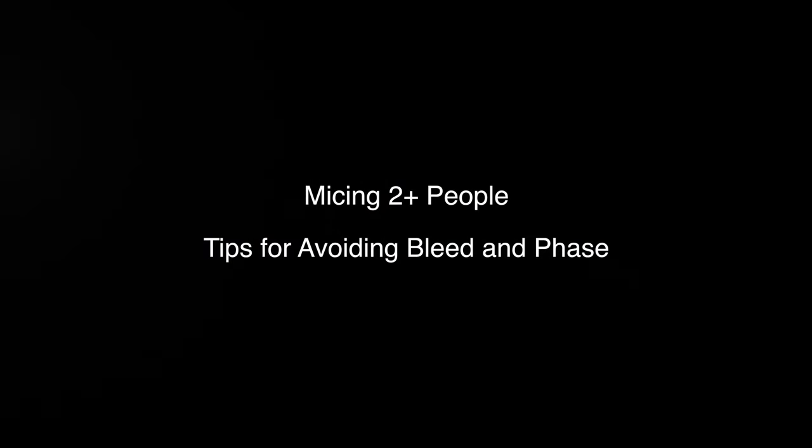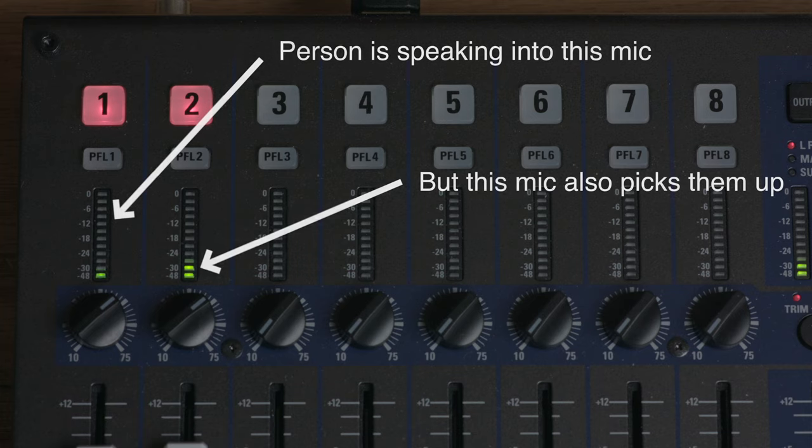In this episode, let's talk about some of the problems you can run into when recording two or more people with two or more mics. When you're recording sound for film and video projects where you have two or more people and they each have their own microphone, there are a couple of common problems that we can run into and some things we can do to prevent those. We're going to do this in two parts. In this episode, we're going to talk about these two main problems and some of the things you can do in terms of mic placement to prevent those problems, and then in the follow-up, we'll talk a little bit more about mixing to help prevent some of these issues.